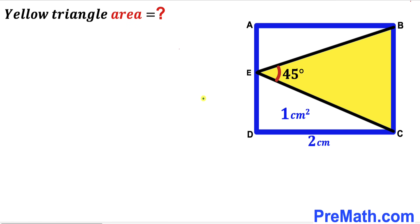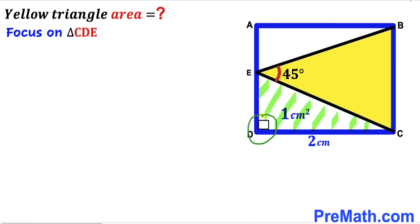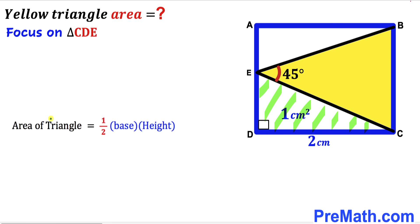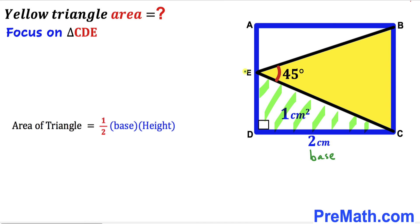Let's get started. Now let's focus on this right triangle CDE. We know this is our 90 degrees angle since we are dealing with this rectangle ABCD. We have been given the area of this triangle as 1 centimeter square. So let's recall the area of a triangle formula: area is equal to one half times base times the height of the triangle. The base of this right triangle is side CD, and the height is side DE. The area is 1.